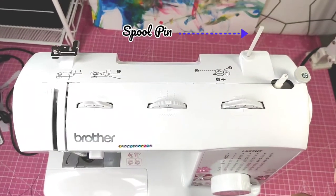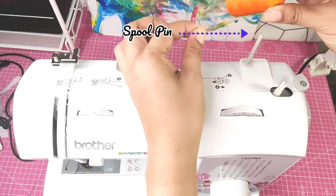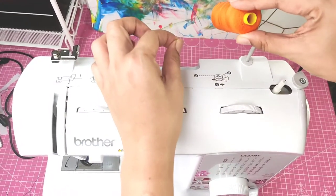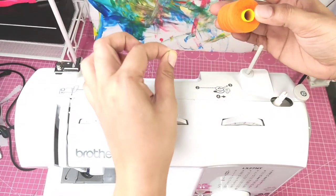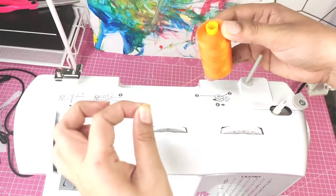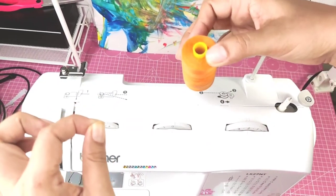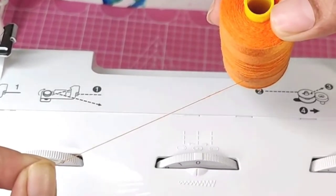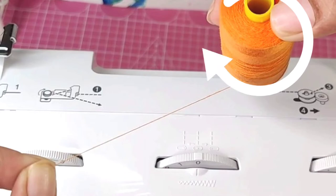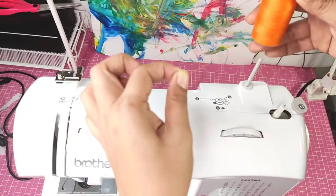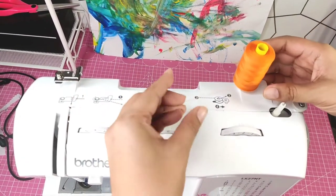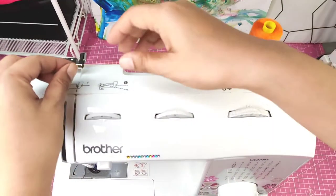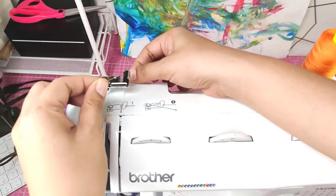Pull up the spool pin to its full upright position. It should lock in its place. With your right hand hold the spool of thread and hold the end of the thread with your left hand. Notice the direction of the thread is in a clockwise direction. Actually I tried to position it in counterclockwise direction too but I didn't notice any difference in the output. Place the spool of thread on the spool pin and guide the end of the thread towards the thread guide.